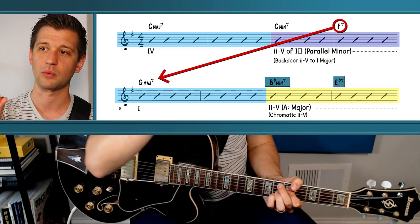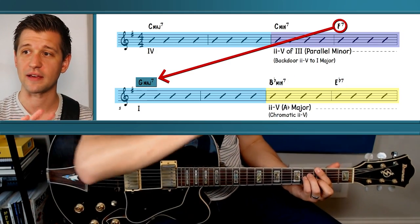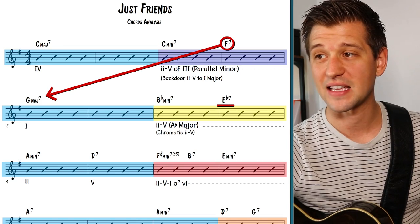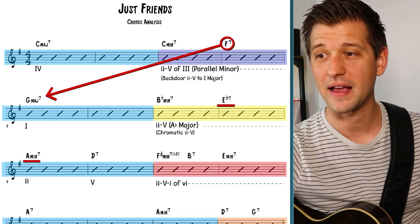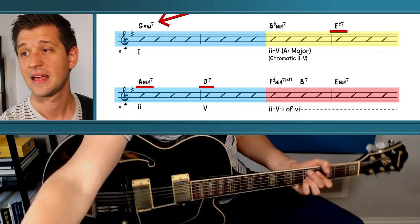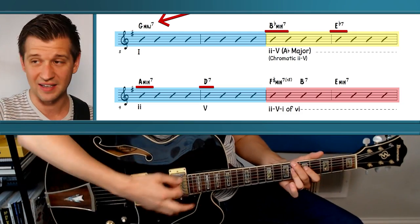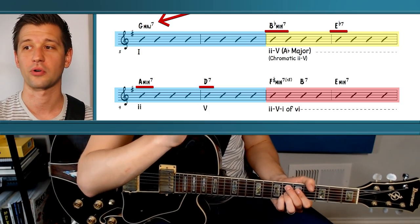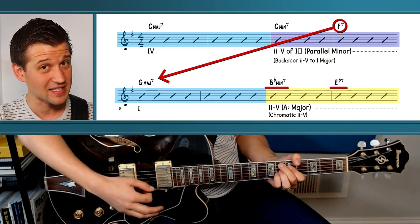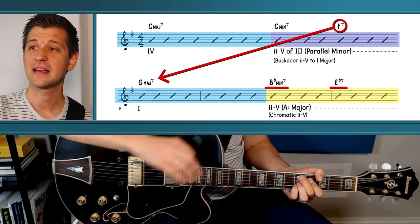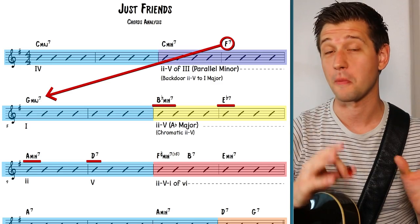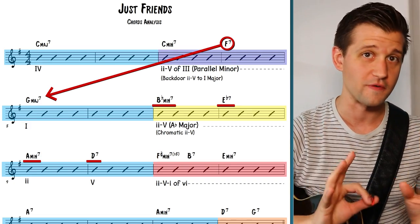When analyzing harmony, we look at what comes before and after. G major seven comes before. B flat minor seven to E flat seven: this E flat seven resolves to A minor seven and D seven. A minor seven, D seven in the key of G major is a two-five chord progression. B flat minor seven and E flat seven is a two-five chord progression within A flat major. When two fives approach each other chromatically like that, we call it a sidestep two five — also called chromatic two fives because they move in half steps.